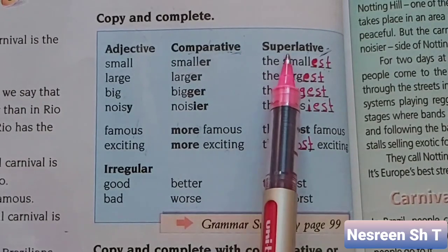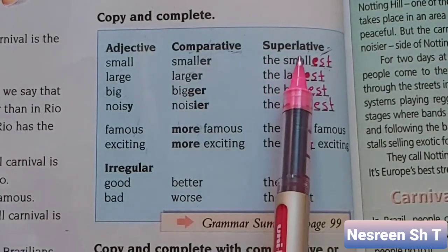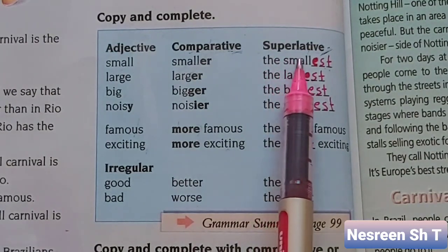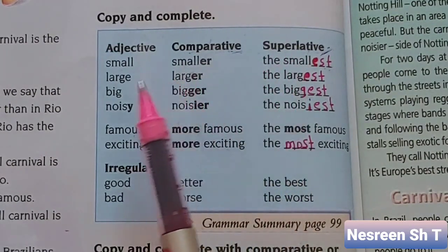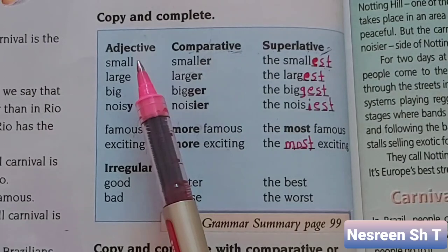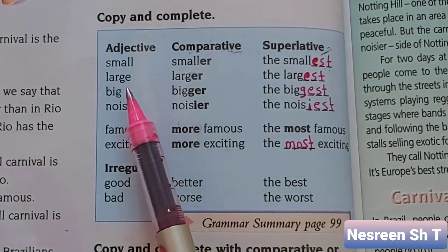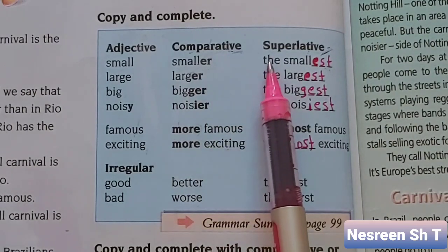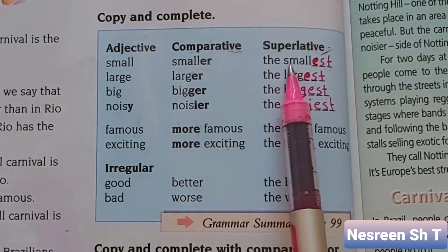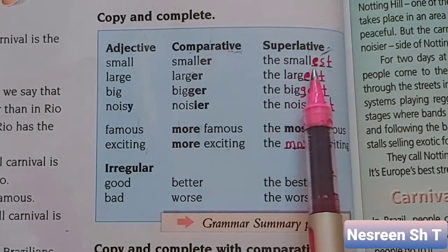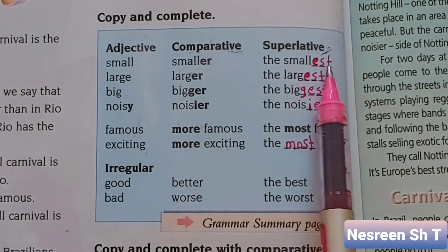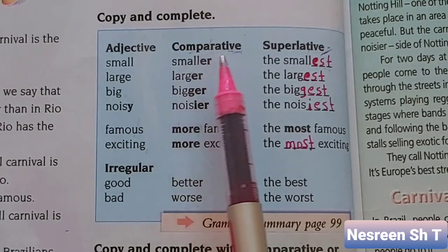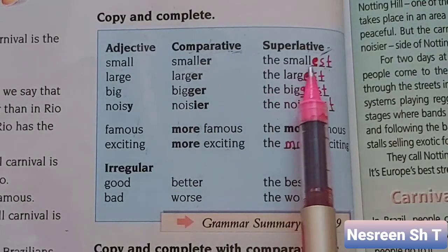Superlative adjectives are used to compare one thing to the others in the same group. When we have a short adjective, for example small, large, big, and noisy, we add the plus the short adjective plus -est at the end of the adjective. Small becomes the smallest.